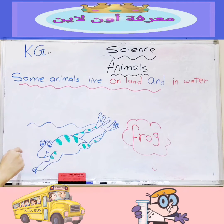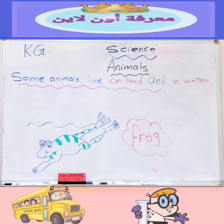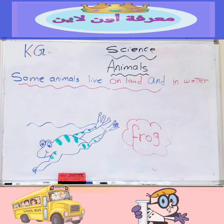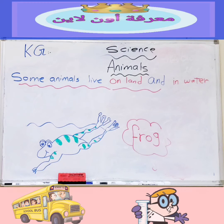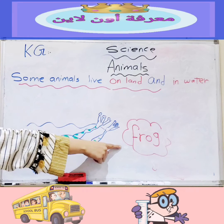Let's collect the lesson. Some animals can live only on land, like the cow. Some animals can live only in water, like the fish. Some animals can live both on land and in water — these are called amphibians, like the frog.